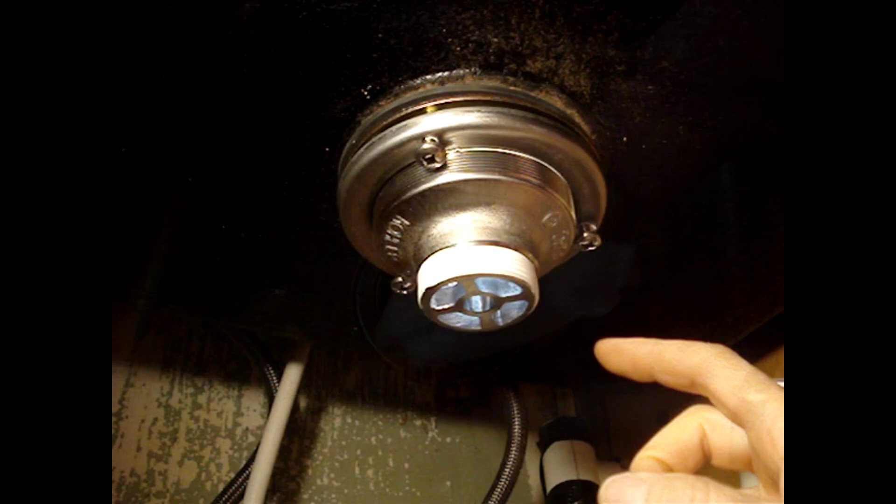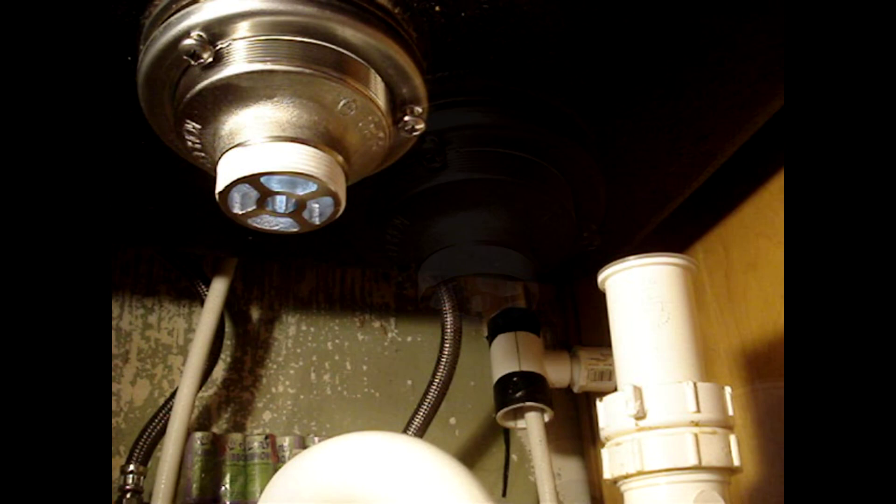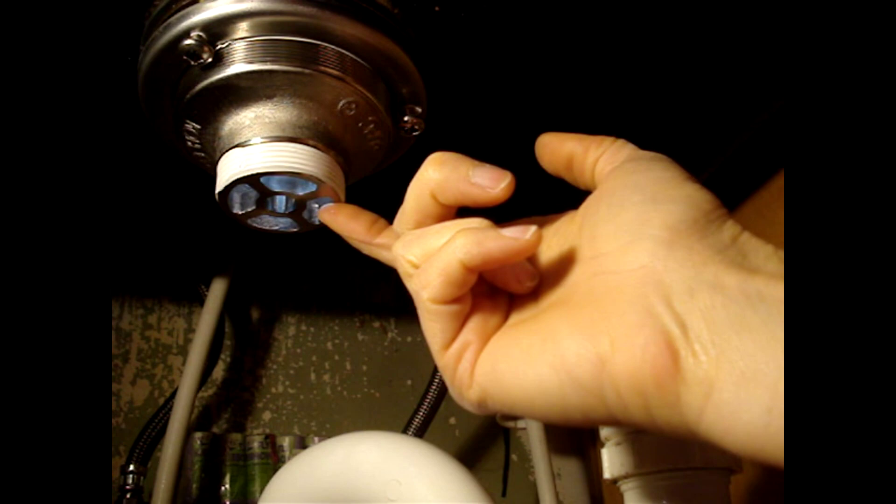To hedge my bets, I did put two wraps of plumber's tape around these threads. When the tailpiece washer is compressed against the bottom of the strainer, it should make a tight seal.